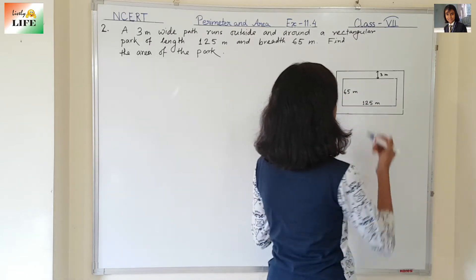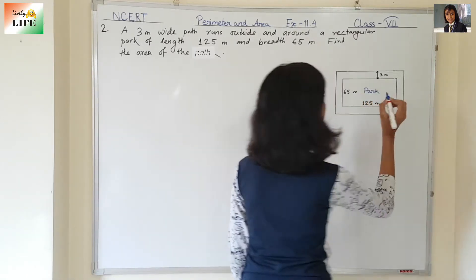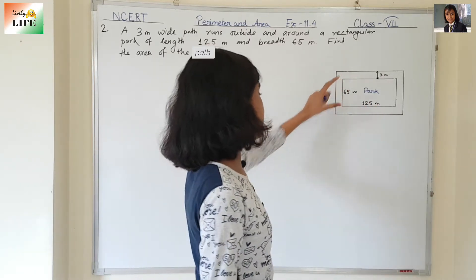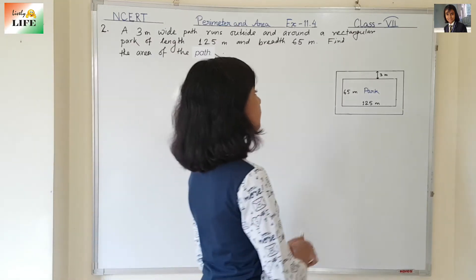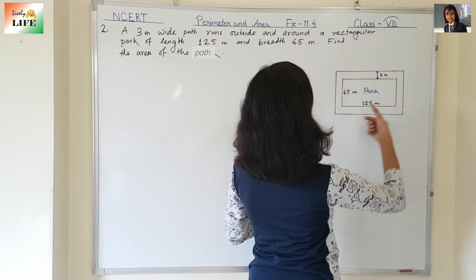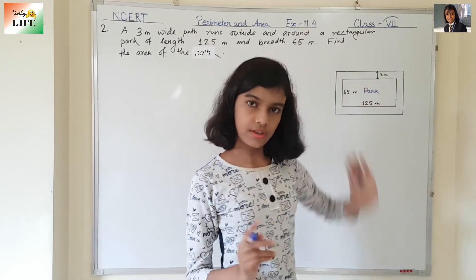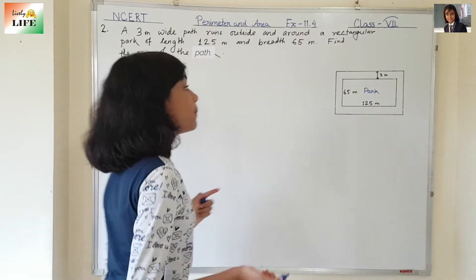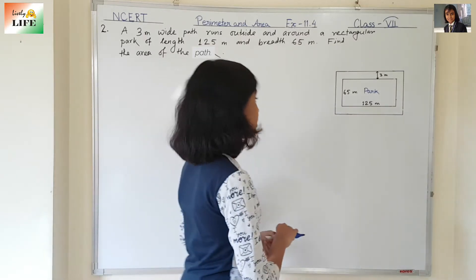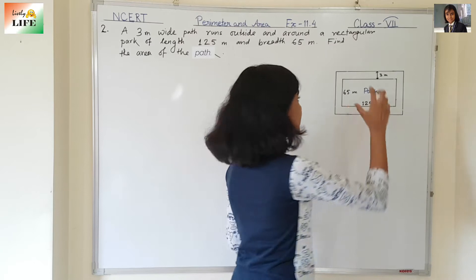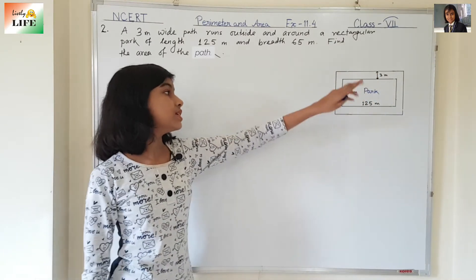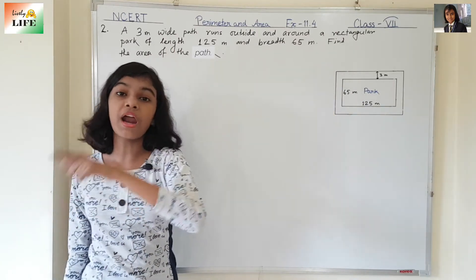You can see this is the park. Its length is 125 meters and its breadth is 65 meters, and a 3 meter wide path runs outside and around it. We need to find the area of this path. For this, we are going to find the area of the park and the area of the park with the path, and then subtract the area of the park from the area of the park with path.